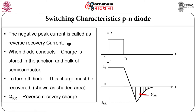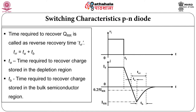This negative peak current is called as reverse recovery current. When diode conducts, charge is stored in the junction and the bulk of the semiconductor. To turn off the diode this charge must be recovered. That charge is shown as a shaded area in the timing waveform. To recover that charge you require some time — that shaded area is nothing but Q_RR, that means reverse recovery charge. Time required to recover this charge is called as reverse recovery time and is denoted by T_RR.